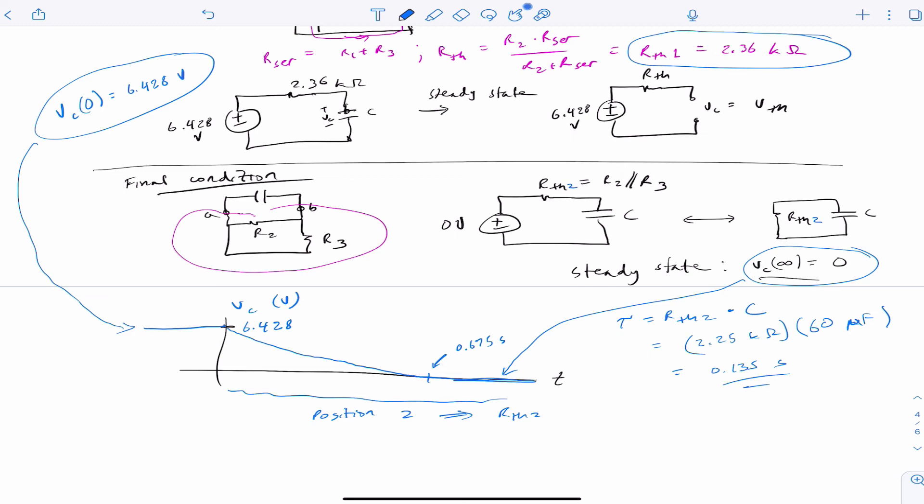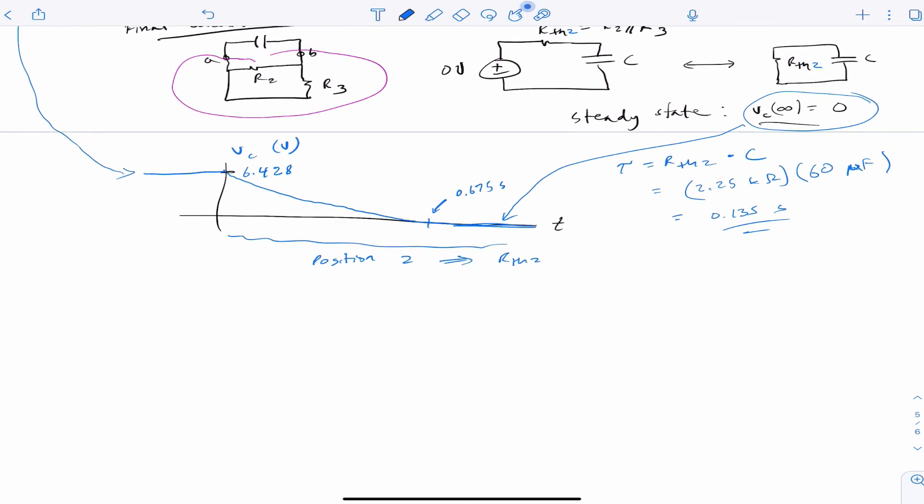If we wanted to write an equation for this, we would start with a unit step. And then the final condition is 0 volts plus the initial condition, and then the decaying exponential. Just double checking it, put in 0 for T, and you get the 6.428 volts. Infinity for T, you get 0. And so this appears to do what we want it to do.